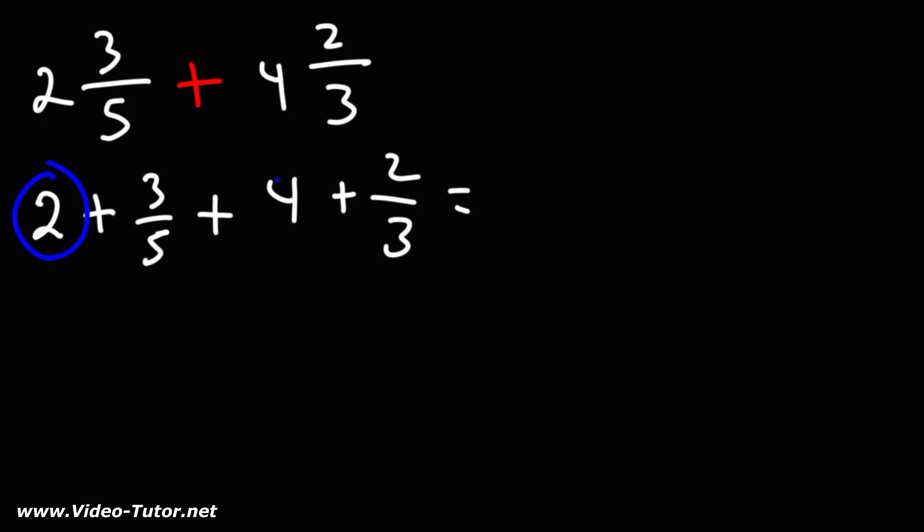Next we could combine the whole numbers 2 and 4. 2 plus 4 is 6. So we have 6 plus 3 over 5 plus 2 over 3.